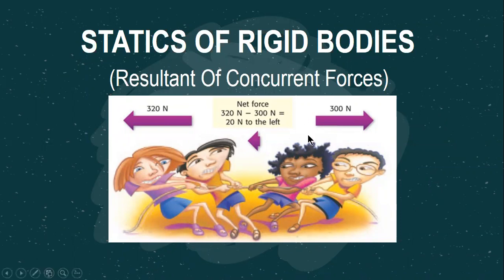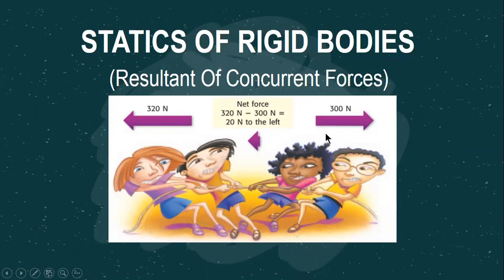In statics of rigid bodies, we first discuss a particle, then a rigid body. The difference is that if you analyze a body as a particle, the size and shape are immaterial or not needed for analysis. For a rigid body, the size and shape are considered. This topic is under statics of a particle.